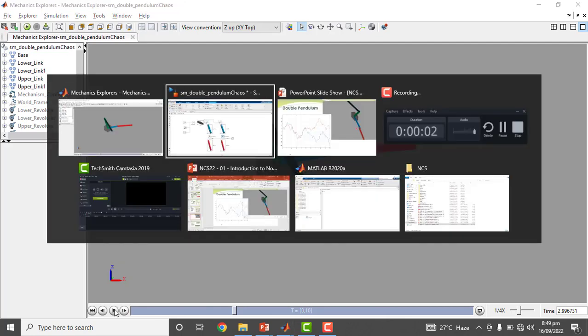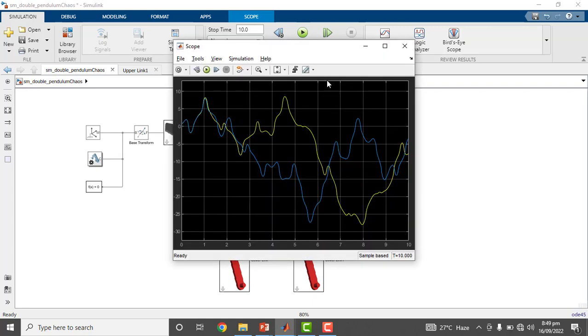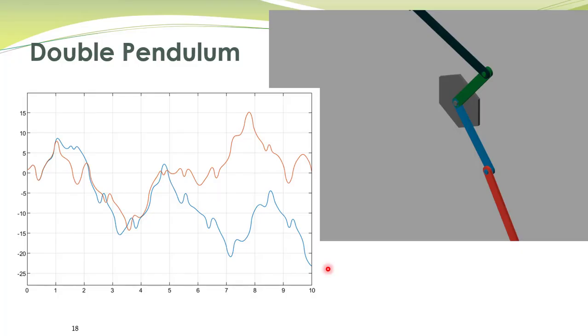So to conclude, nonlinear systems may exhibit a chaotic behavior that is not there in linear systems. And furthermore, this chaos is different from stochasticity.